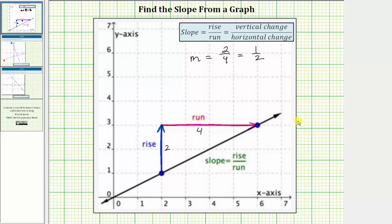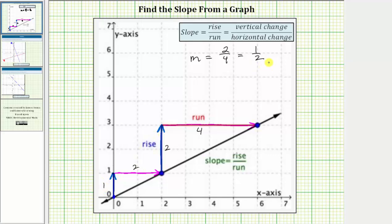Now it doesn't matter which two points we use to determine the slope of a line — the slope will always be the same. For example, if we use the point at the origin and this point here, to move from the point on the left to the point on the right, notice how we have to move up one unit, which means the vertical change or rise is positive one. And then we have to move right two units, which means the horizontal change or run is positive two.